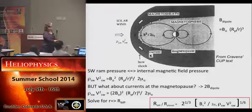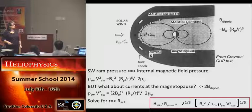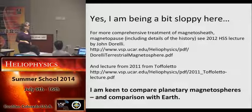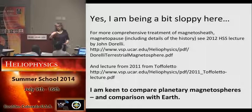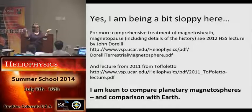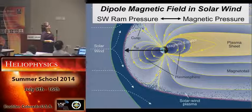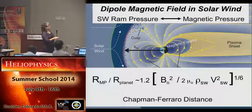You end up with a balance between ρv² and the internal field pressure, and you solve for the magnetopause distance. This familiar expression describes what the standoff distance depends on: the internal field strength and the upstream dynamic pressure. Notice the 1/6th power, which dampens the sensitivity to variations. This is often called the Chapman-Ferraro distance, going back to the 1931 paper.